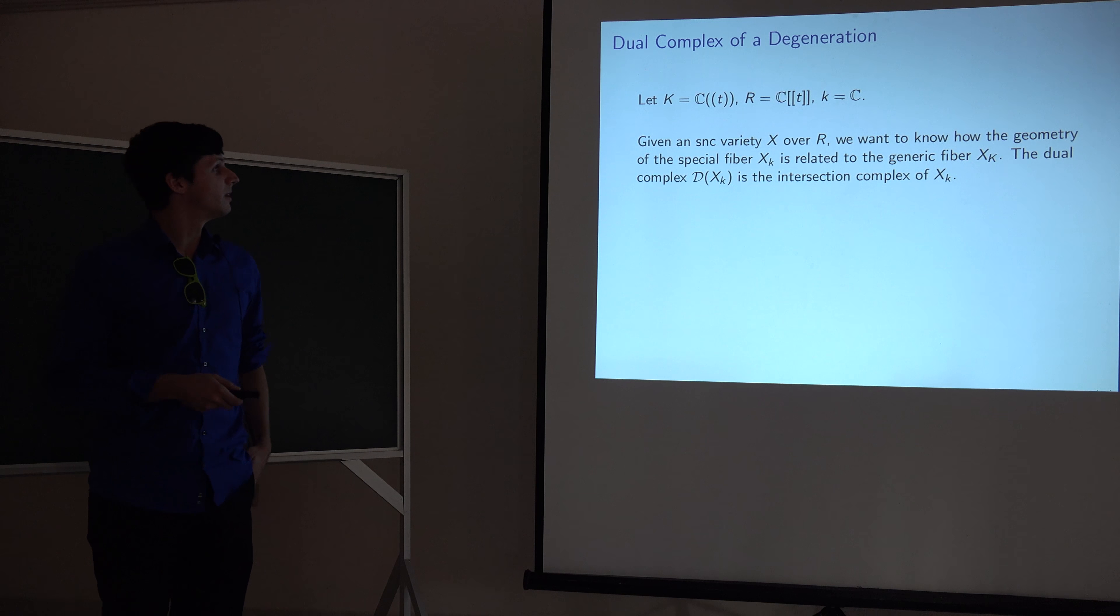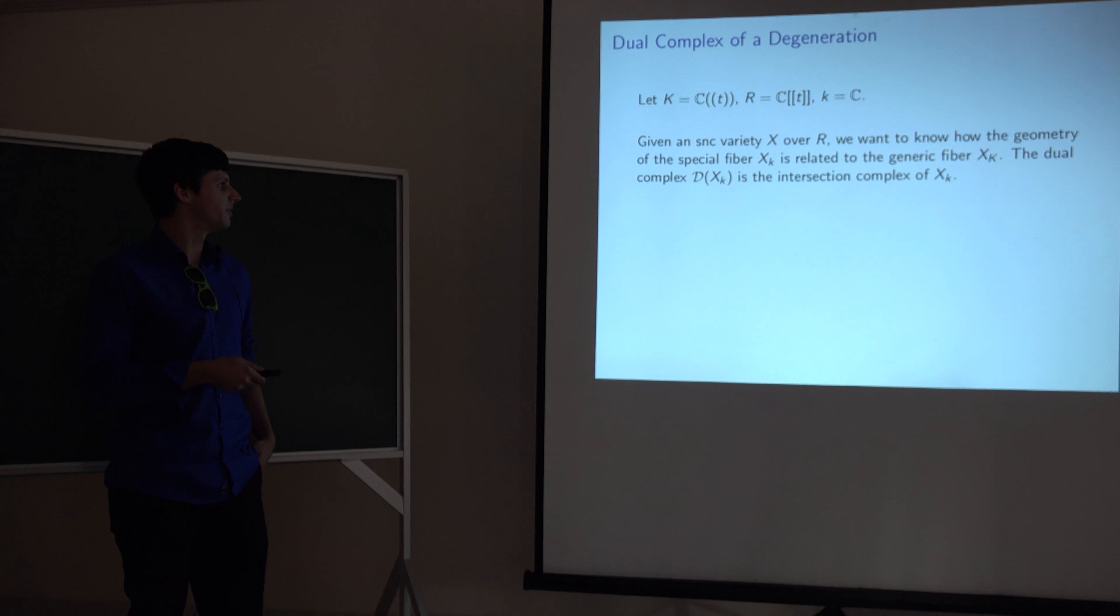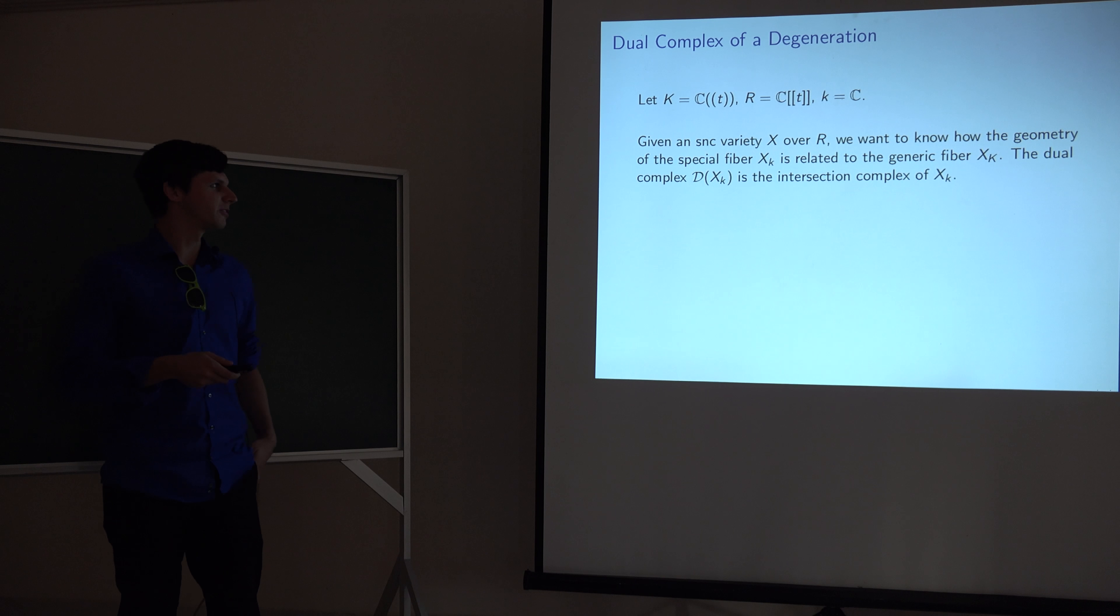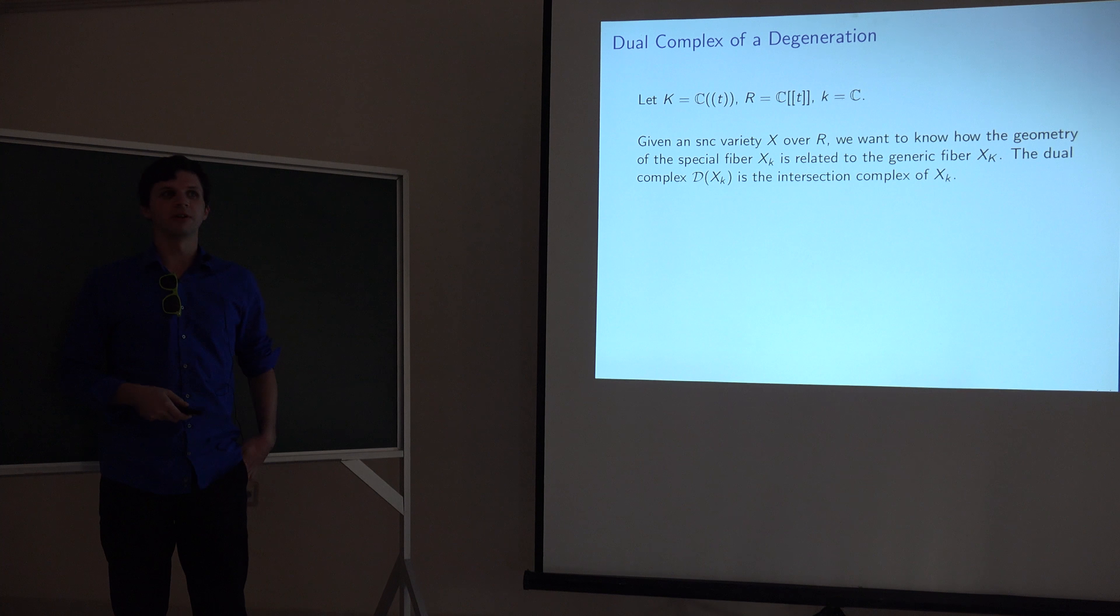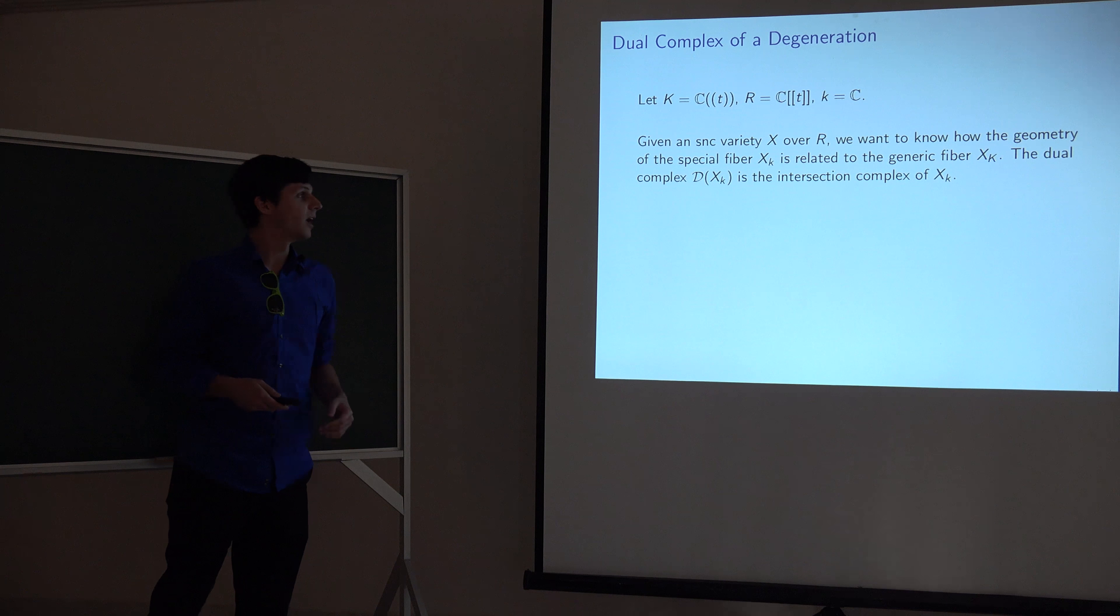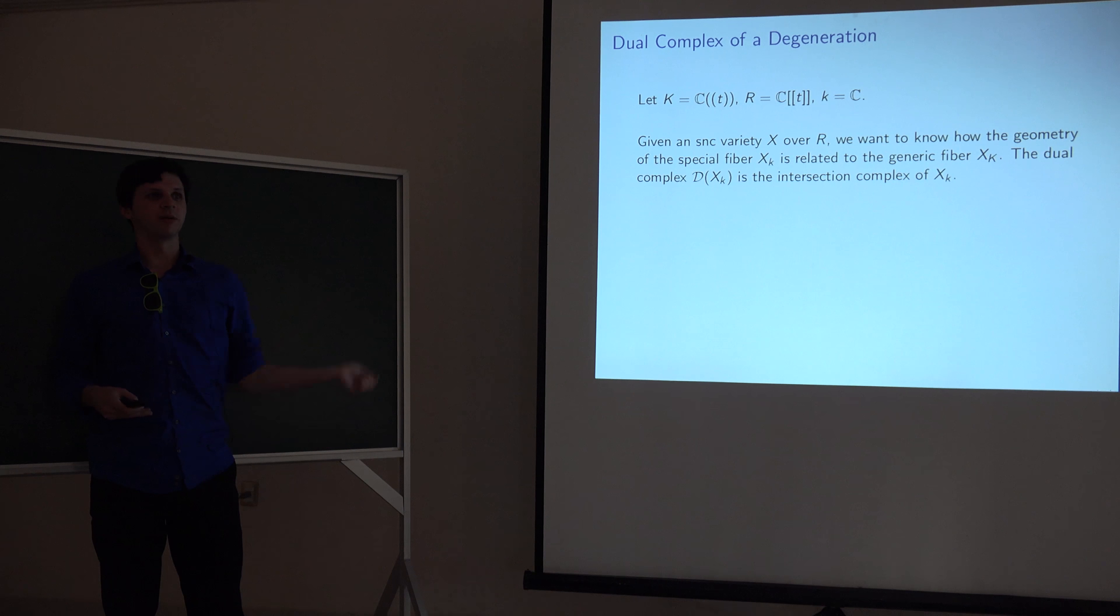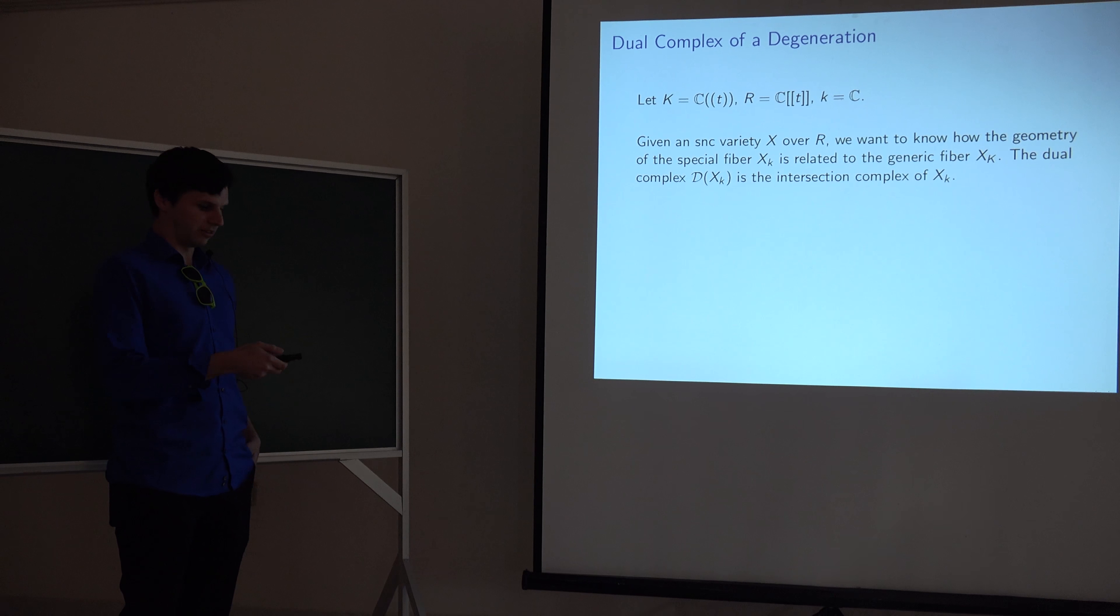So the object we're interested in is a combinatorial object called a dual complex. And this is just the intersection complex of special fiber. So we have a bunch of divisors. Those give us points in the intersection complex, in the dual complex. And where they intersect, we put a one cell. And when they intersect every component, we put an N cell. And I'll show some examples in a little bit.